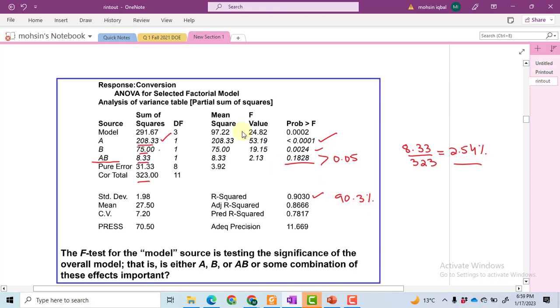We have a total of 12 observations, so 12 minus 1 gives 11 degrees of freedom. Each of the factors has two levels, so we have only one degree of freedom for A and B. AB can be calculated using the formula (A-1) times (B-1), so 1 times 1 equals 1.